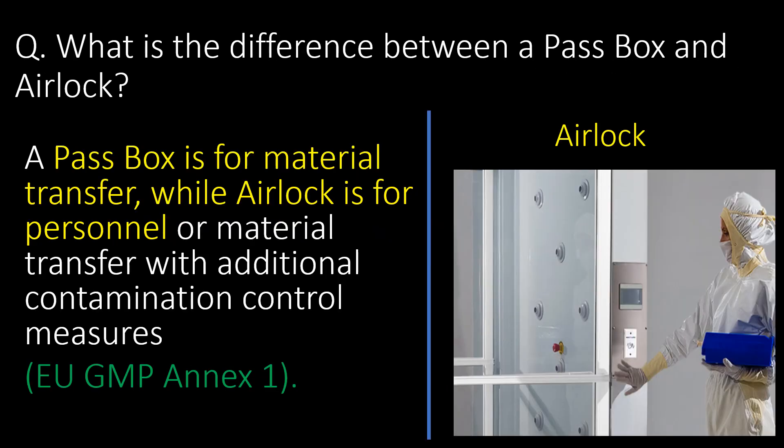What is the difference between a pass box and an airlock? A pass box is for material transfer, while an airlock is for personnel or material transfer with additional contamination control measures. Reference: EU GMP Annex 1.